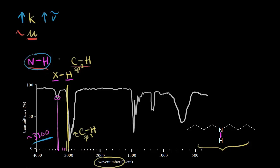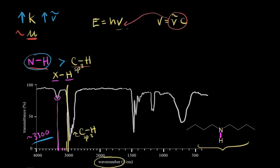The nitrogen-hydrogen bond is stronger than the carbon-hydrogen bond where the carbon is SP3 hybridized. If it's stronger, it takes more energy to cause that bond to stretch. Energy is equal to H — Planck's constant — times the frequency. So when talking about the energy of a photon, it's equal to H times nu. The frequency is equal to the wave number times the speed of light, so the energy is directly proportional to wave numbers: E equals H times the wave number times the speed of light.